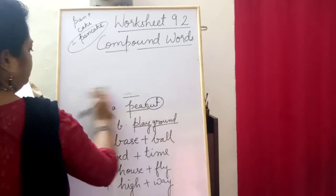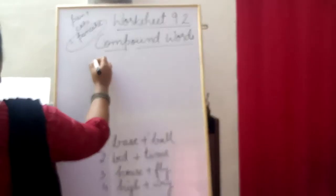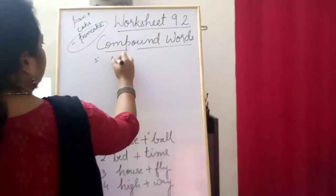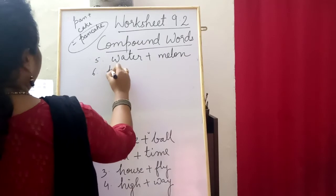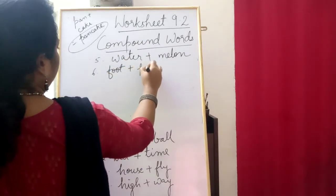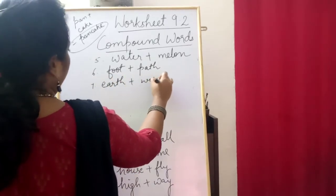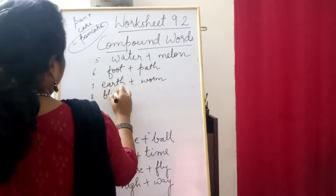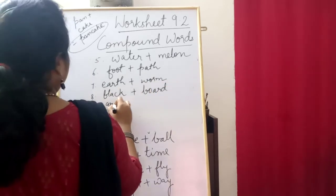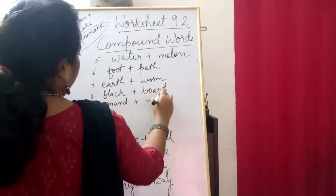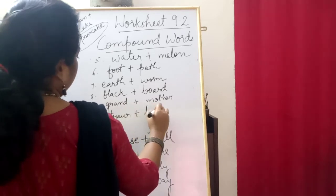Let me just clean the board and continue. Fifth one is watermelon — this is water and melon. Sixth is footpath — foot and path. Seventh is earthworm — earth and worm. Blackboard was given in the example also — black and board. Grandmother — grand and mother. Strawberry — straw and berry. So these are the answers of this worksheet.